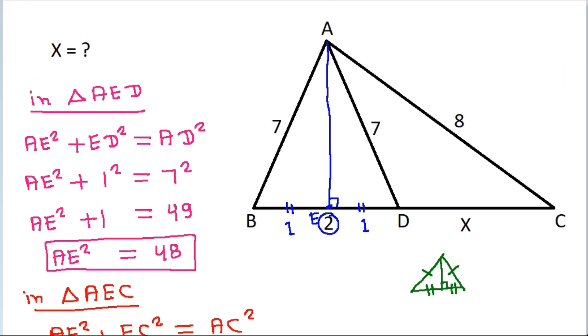And EC equals ED plus DC. And EC is 4, that is equal to ED is 1 plus DC is X. So, X will be 3.